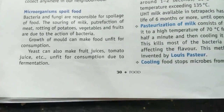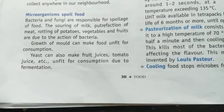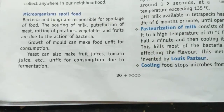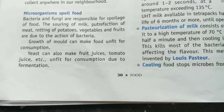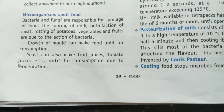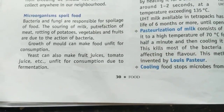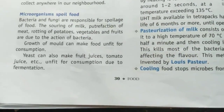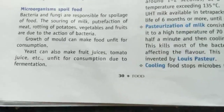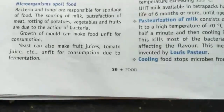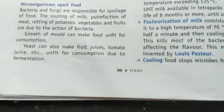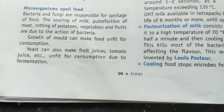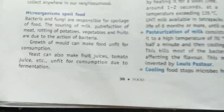Microorganisms spoil food. Bacteria and fungi are responsible for spoilage of food. The souring of milk, putrefaction of meat, rotting of potatoes, vegetables and fruits are due to the action of bacteria. Growth of mold can also make food unfit for consumption.